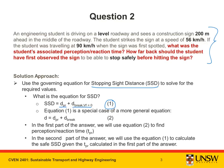However, in this question the student strikes the sign at a speed of 56 kilometers per hour, therefore the final velocity is not equal to zero. We must then use a more general equation of the stopping sight distance. This is equation two. Here we can calculate a distance for the car stopping, which includes two components: a perception reaction time distance and a distance to brake. In this more general equation we have not specified that the final velocity must be equal to zero. Therefore, in the first part of the answer, we will use equation two to find the perception reaction time of the driver.